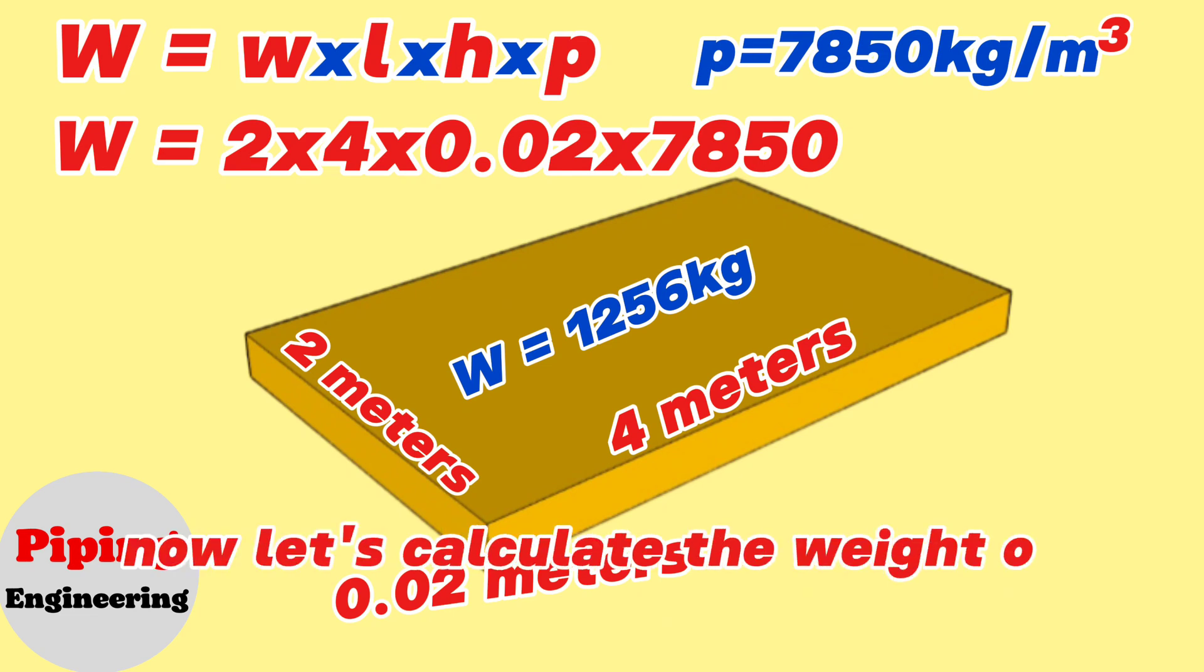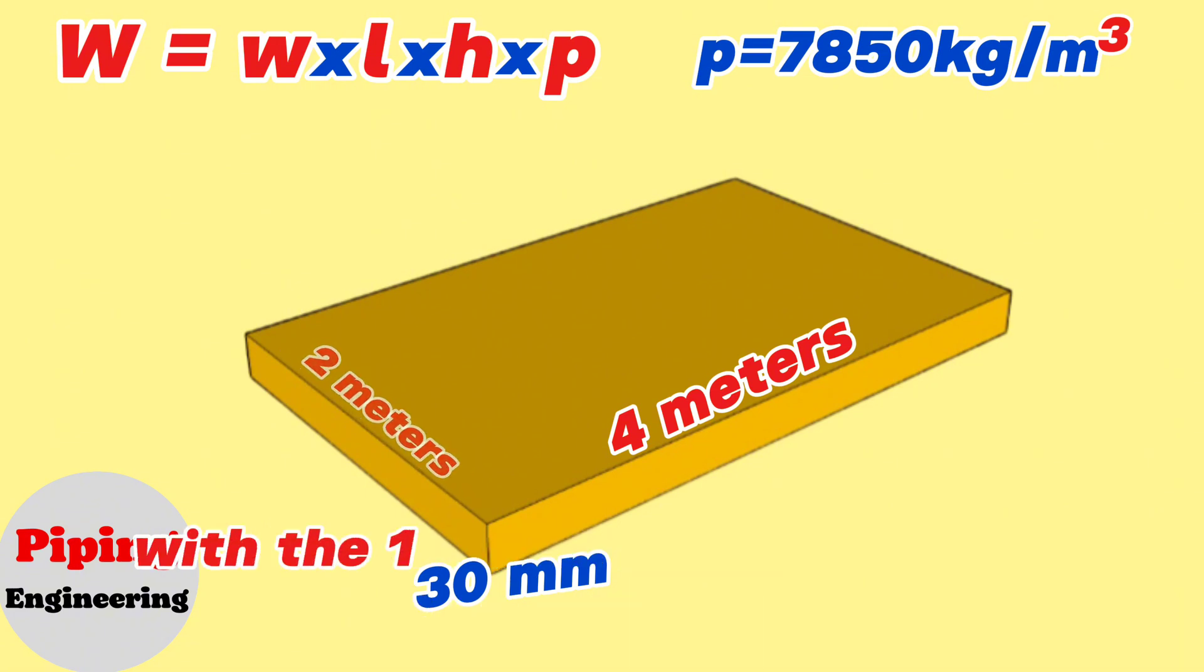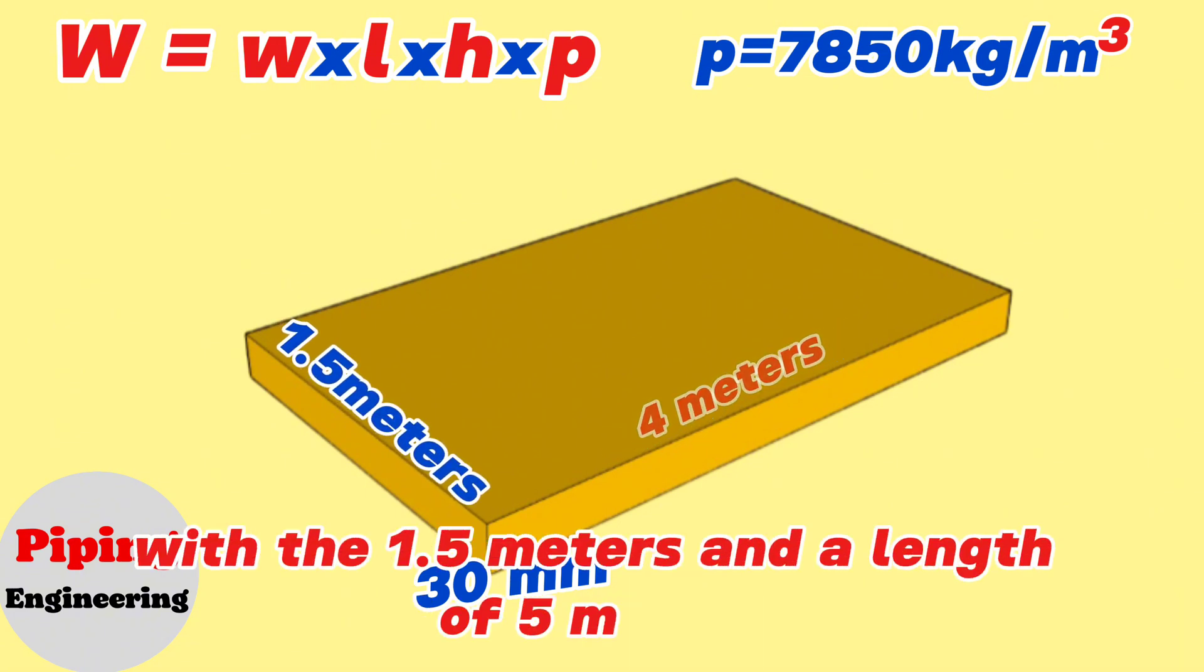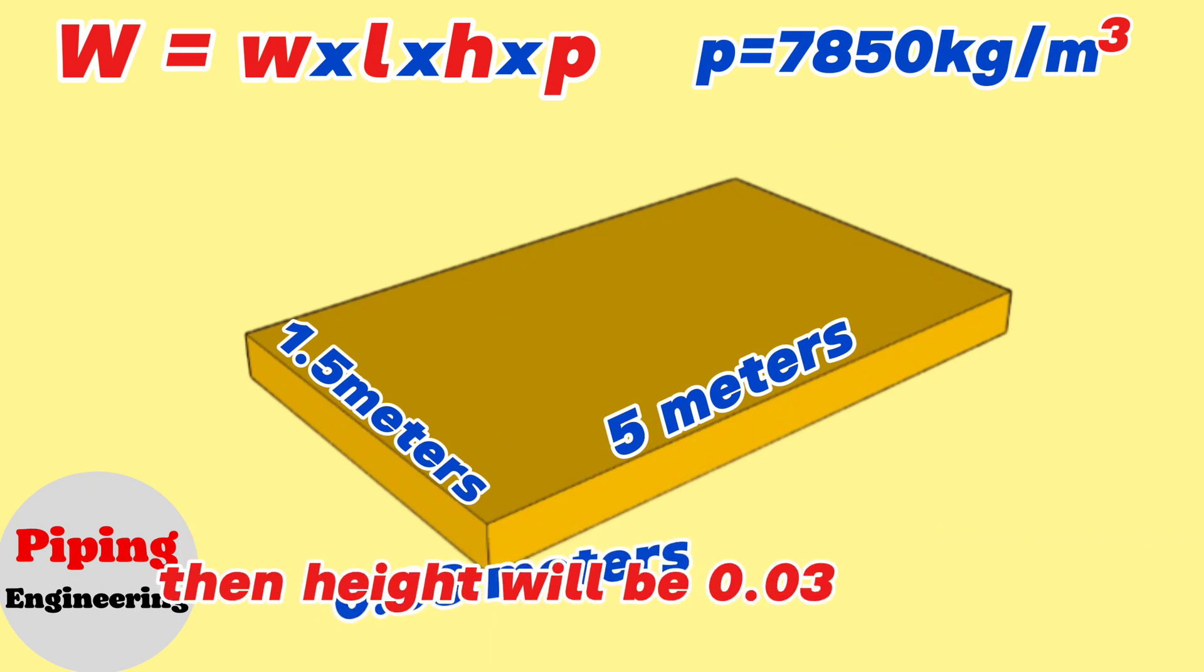Now let's calculate the weight of iron metal sheet with a wall thickness of 30 millimeters, width of 1.5 meters, and a length of 5 meters. If we convert the height of the metal sheet, then height will be 0.03 meters.